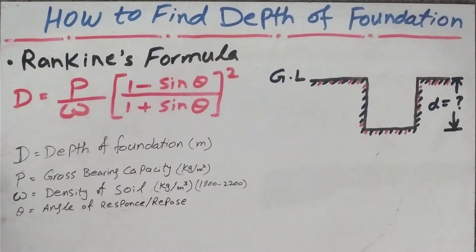P is the gross bearing capacity of the building. Then we have density of soil. P is the load, for example gross bearing capacity, obviously any load that comes on the foundation in kg/m². Then we have density of soil which is kg/m³, and the density of soil is between 1800 to 2200 kg/m³.